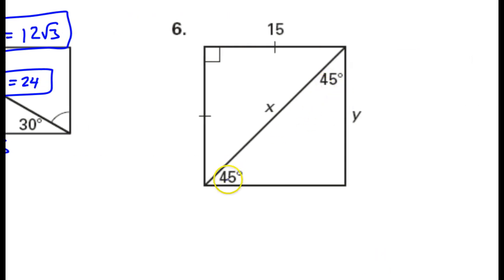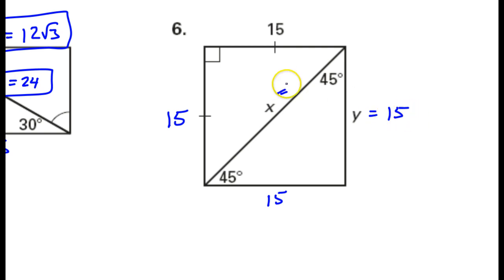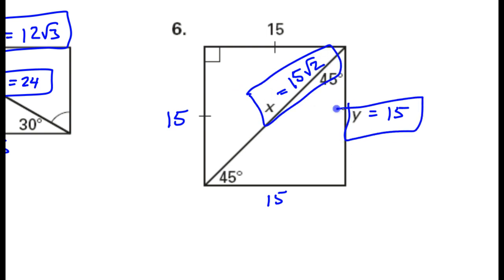We have a 45-45-90 triangle here. These sides are the same, so we're looking at a square. So this is 15, and then this is also 15. Everything is 15 — it's a square, so this side over there is also 15. The pattern says the hypotenuse should be leg times radical 2, so this should be 15 times radical 2. So x is 15 radical 2 and y is 15.